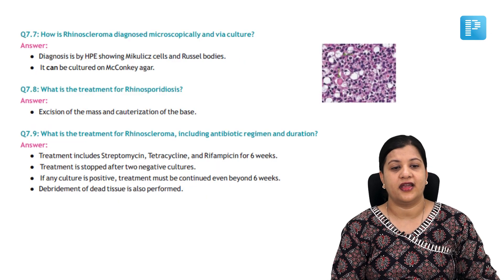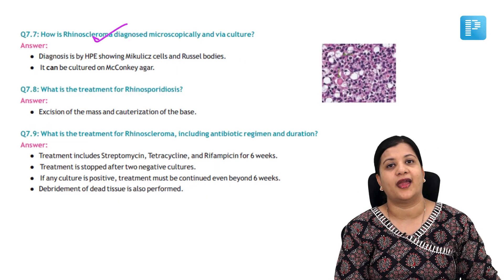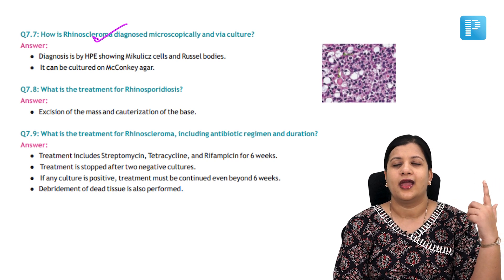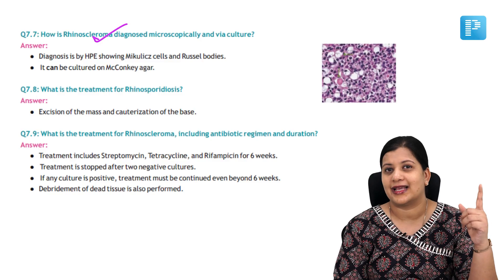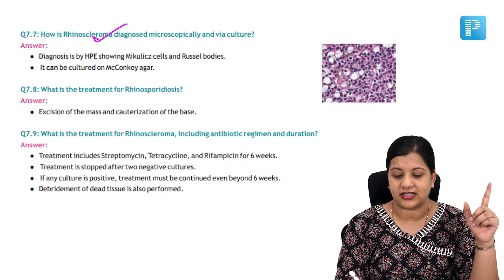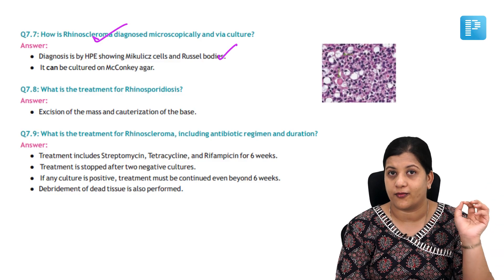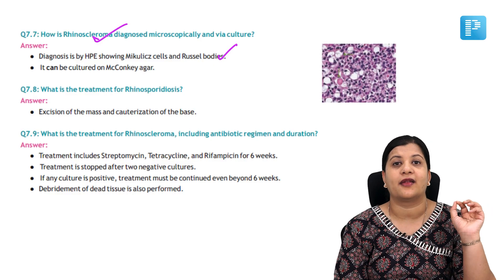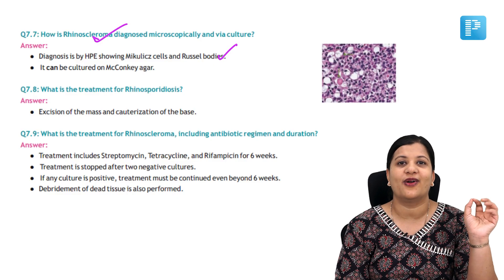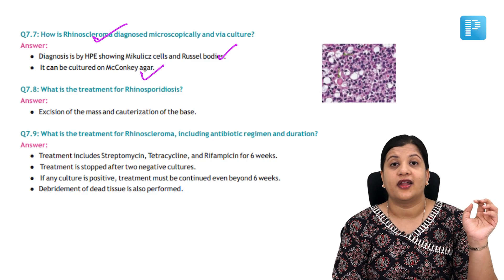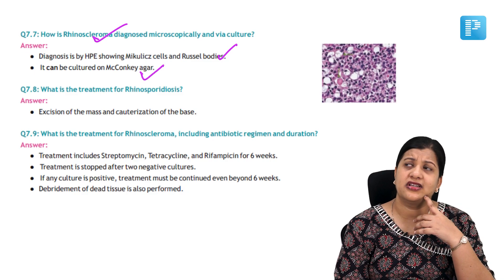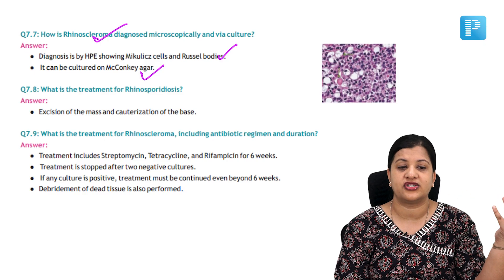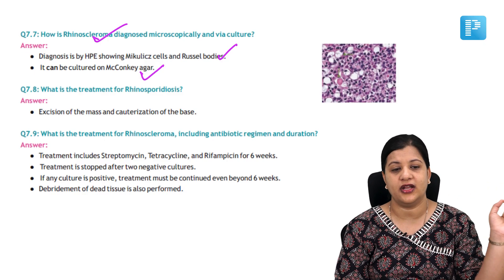How do we identify rhinoscleroma on microscopy and on culture? If you close your eyes and recall, on HPE there were Mikulicz cells and Russell bodies — that's the most important point. It can also be cultured, and the agar used is MacConkey's agar. Coming to rhinosporidiosis — can we culture it? No. But on histopathology we see sporangia with spores, which is characteristic of rhinosporidiosis.